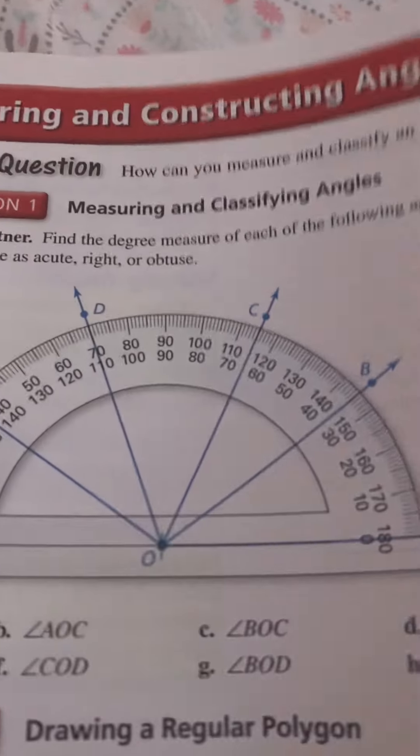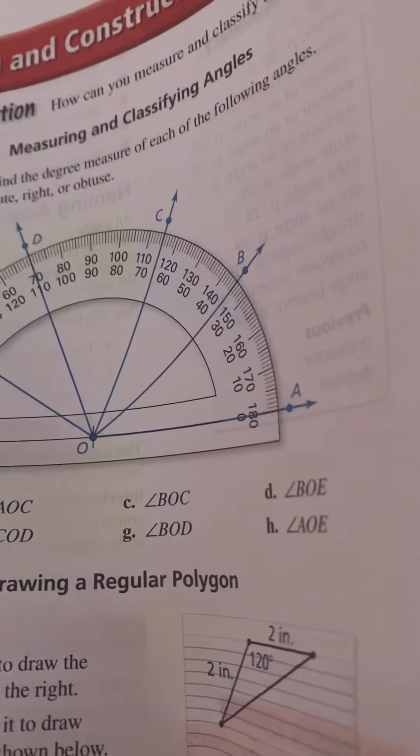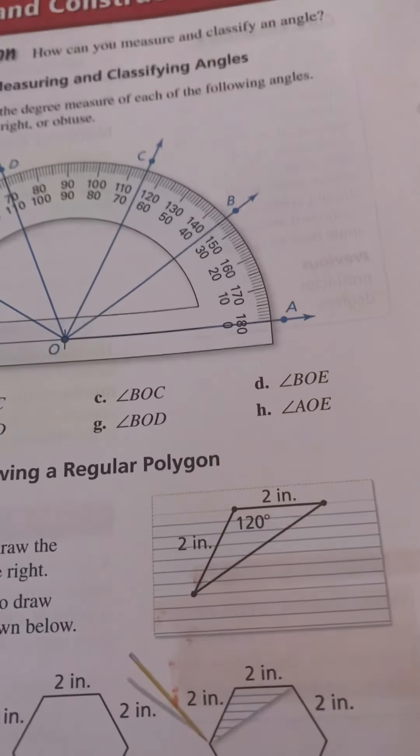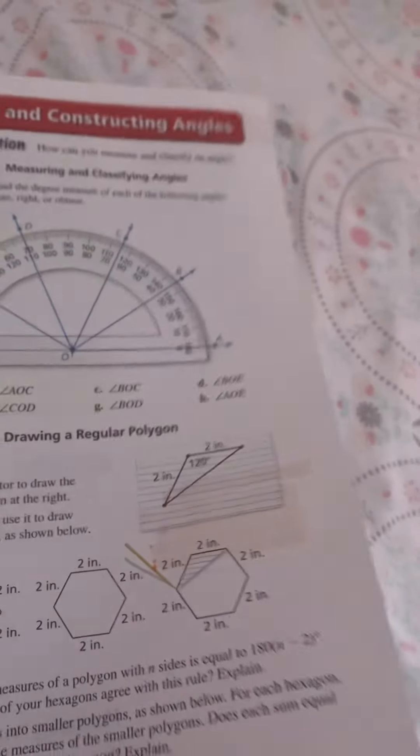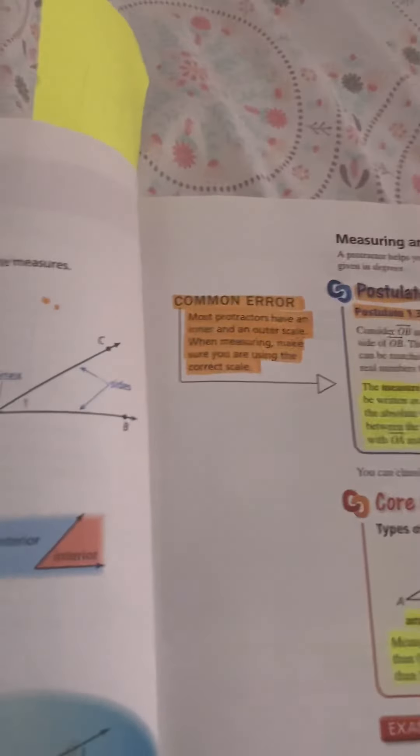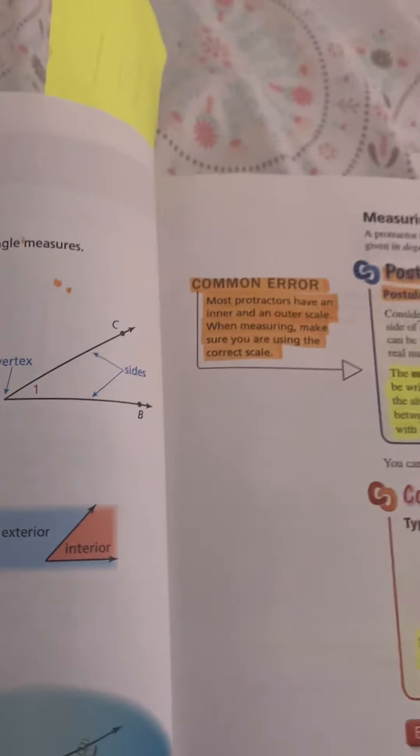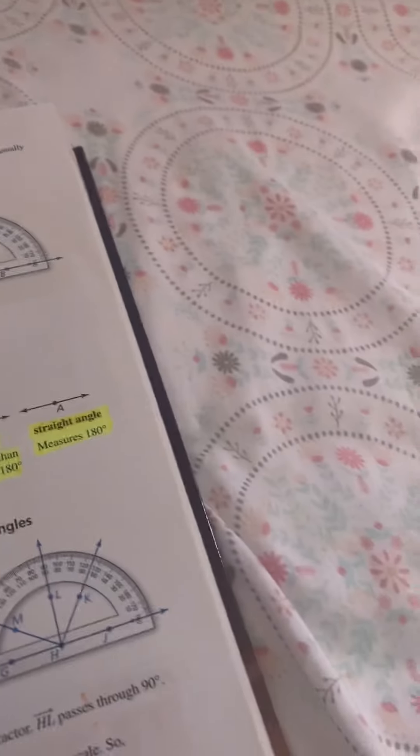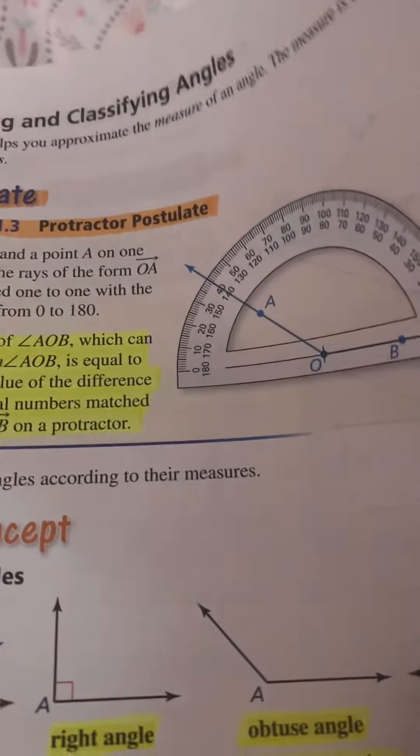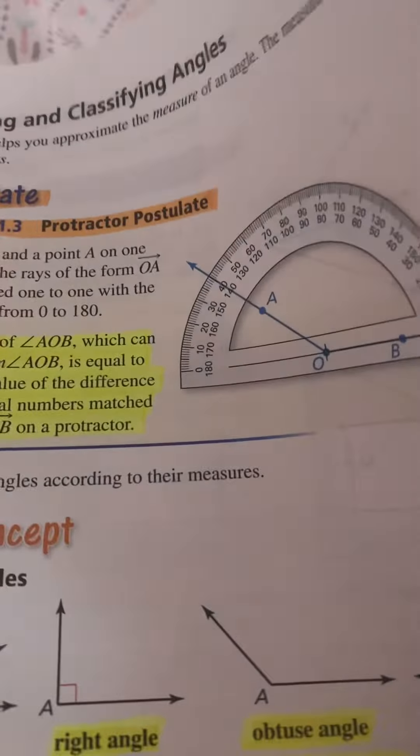1.5 Measuring and Constructing Angles: Attending to Precision. To be proficient in math, you need to calculate and measure accurately and efficiently. Common error: When the point is the vertex of more than one angle, you cannot use the vertex alone to name the angle. Common error: Most protractors have an inner and outer scale; when measuring, make sure you're using the correct scale.